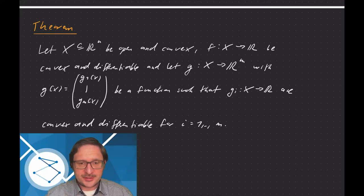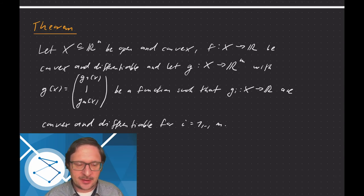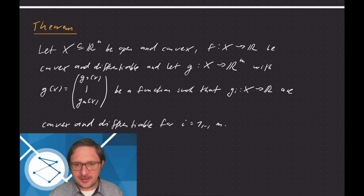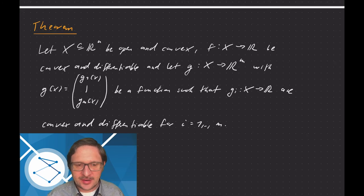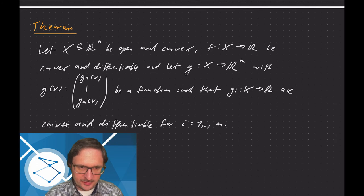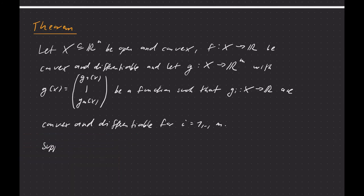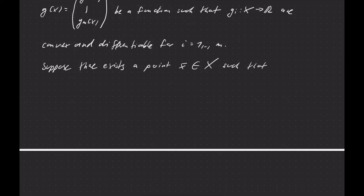And we need one more condition, a so-called constraint qualification once again. This time we'll use one that is in most practical applications easily fulfilled. So we will demand that there is a strictly feasible point. So meaning one feasible point where not only g is less or equal to zero, but strictly less than zero. Okay, so suppose there exists a point, it's called x̄ ∈ X such that g(x̄) is strictly less than zero. So for all components that will hold, gᵢ(x̄) < 0 for all components gᵢ.